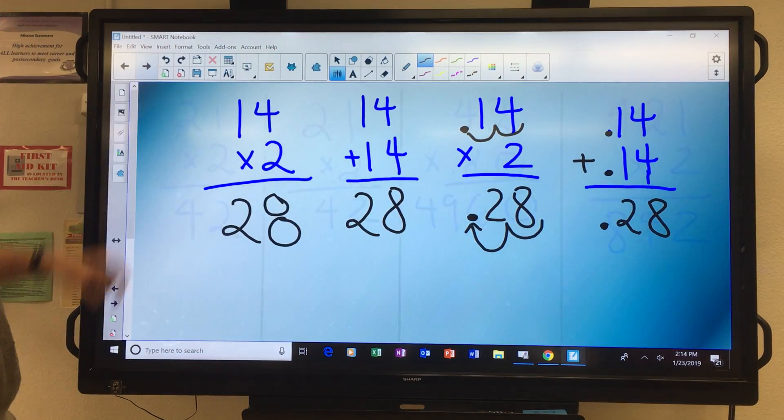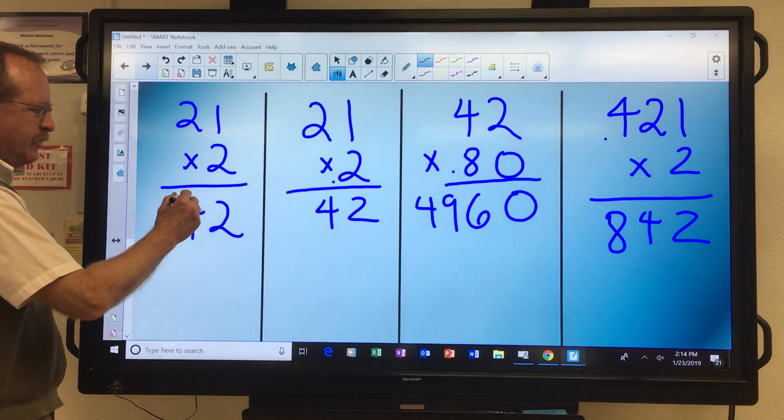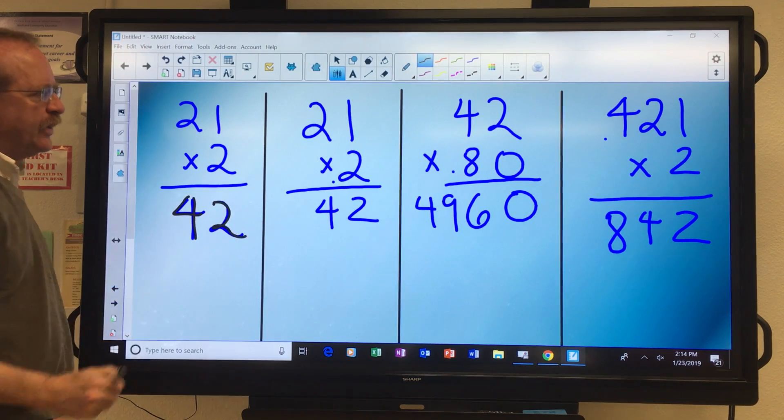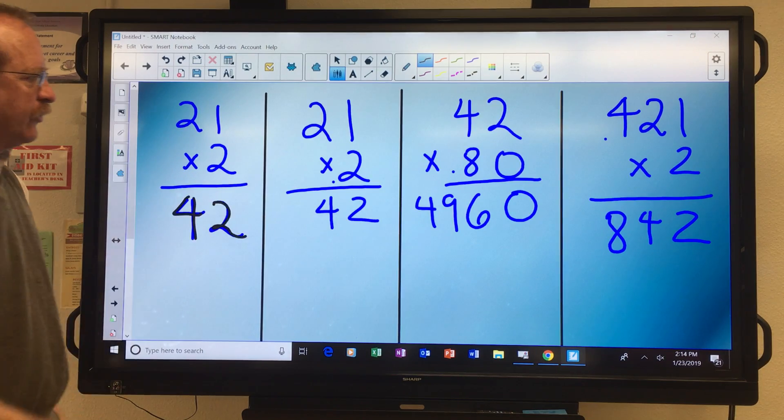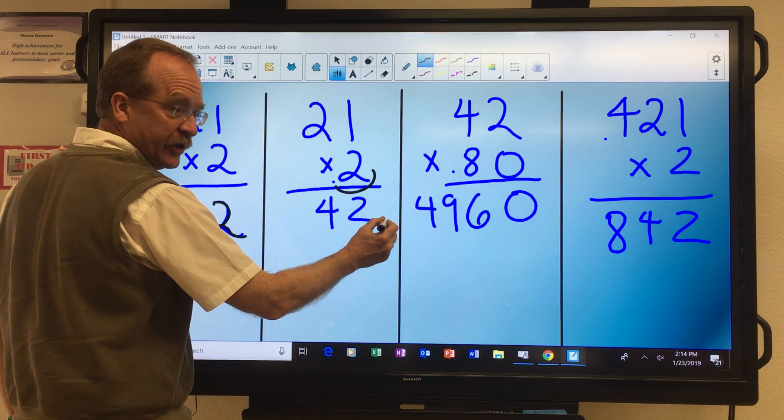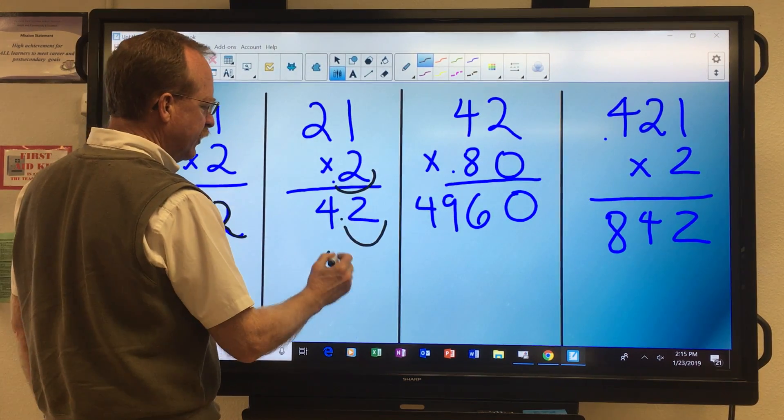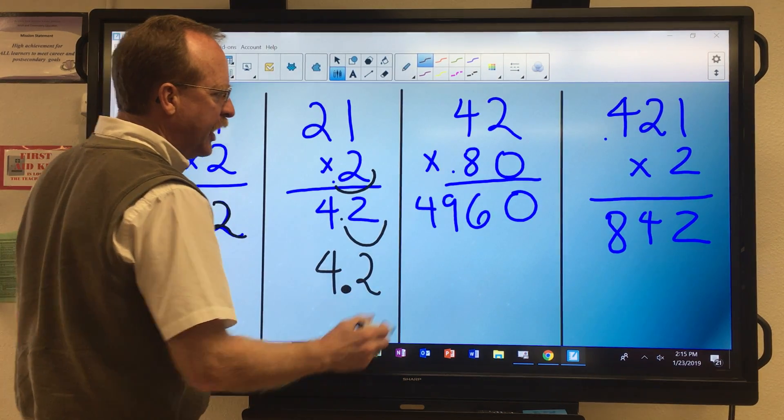Let me demonstrate. So here I have no decimals. Answer 2 times 21, 42. Now here though I put a .2. So I count to myself 1. And I do the same thing, I start here, and I count to myself 1. My final answer, 4.2.